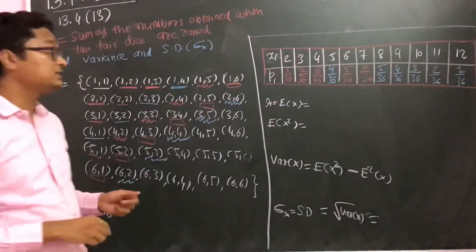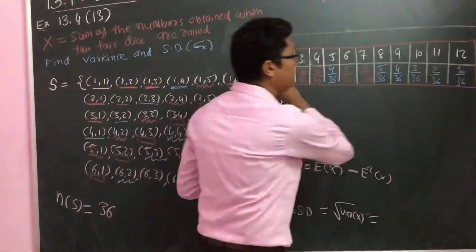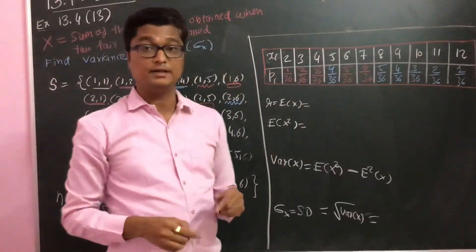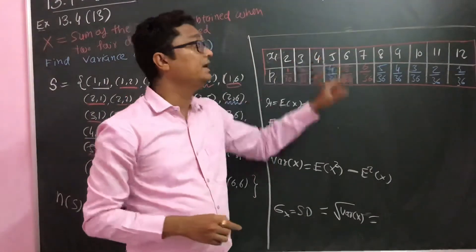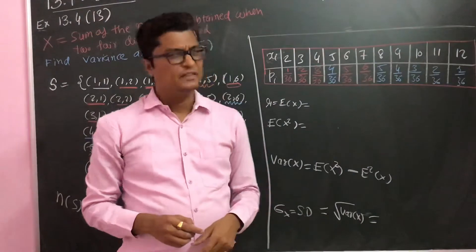If you will add this all, it will be 36 by 36 and equals to 1. So this means our probability distribution is correct.